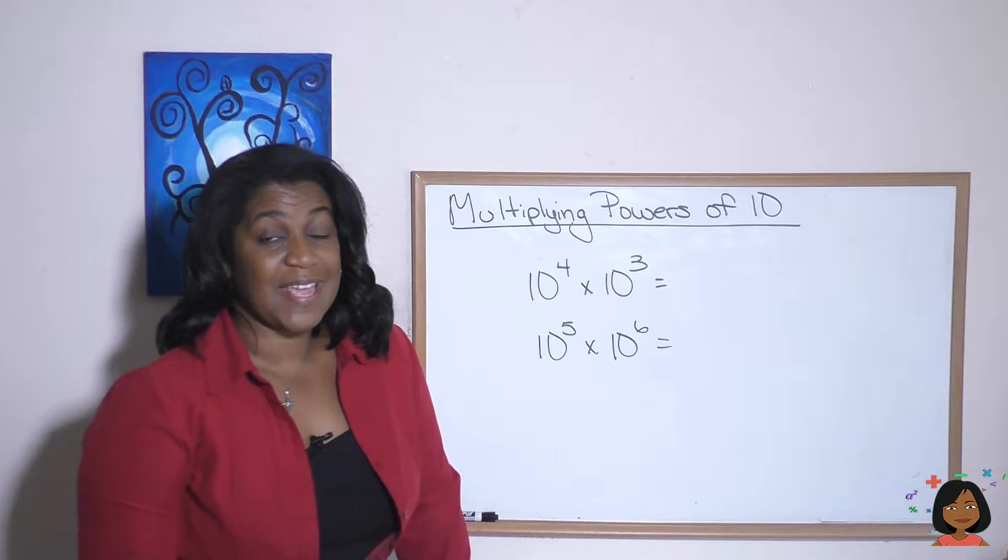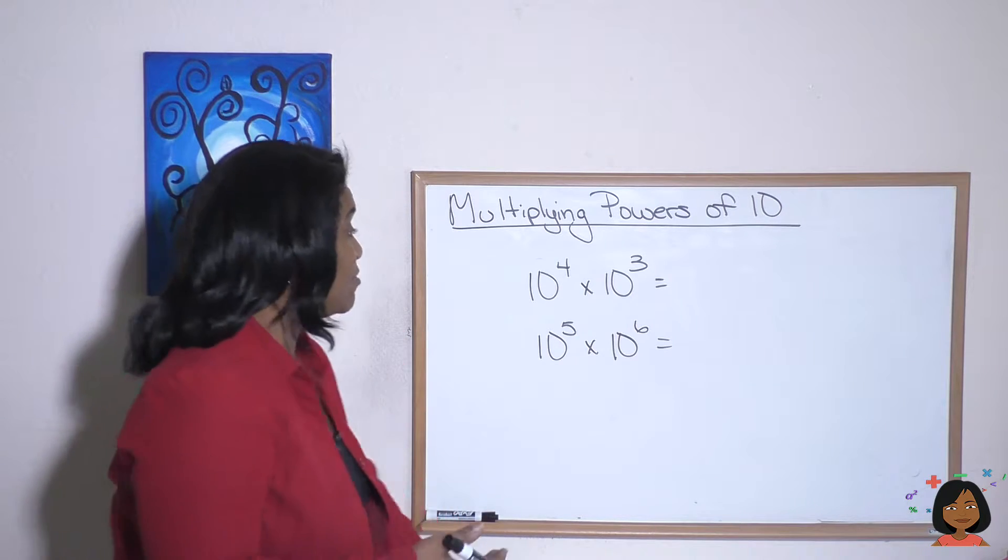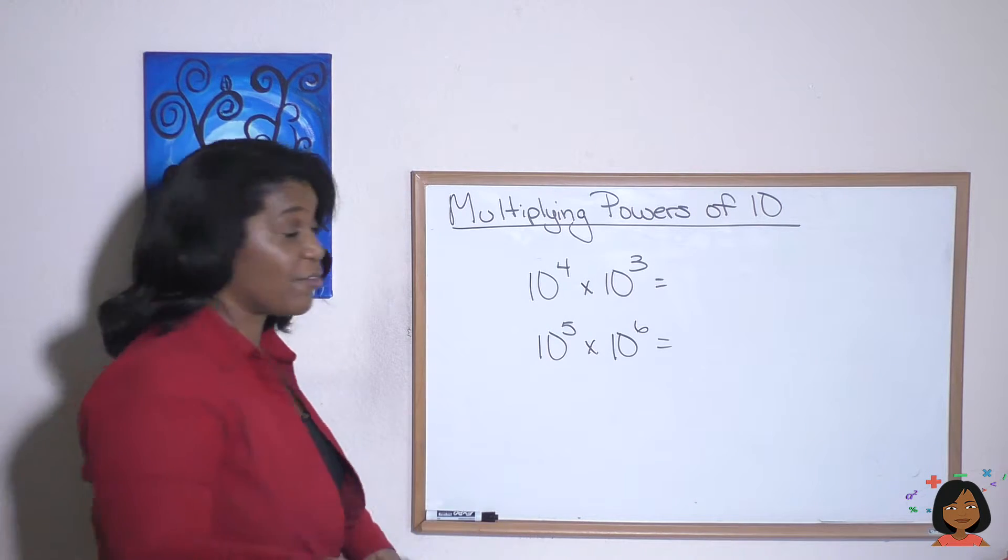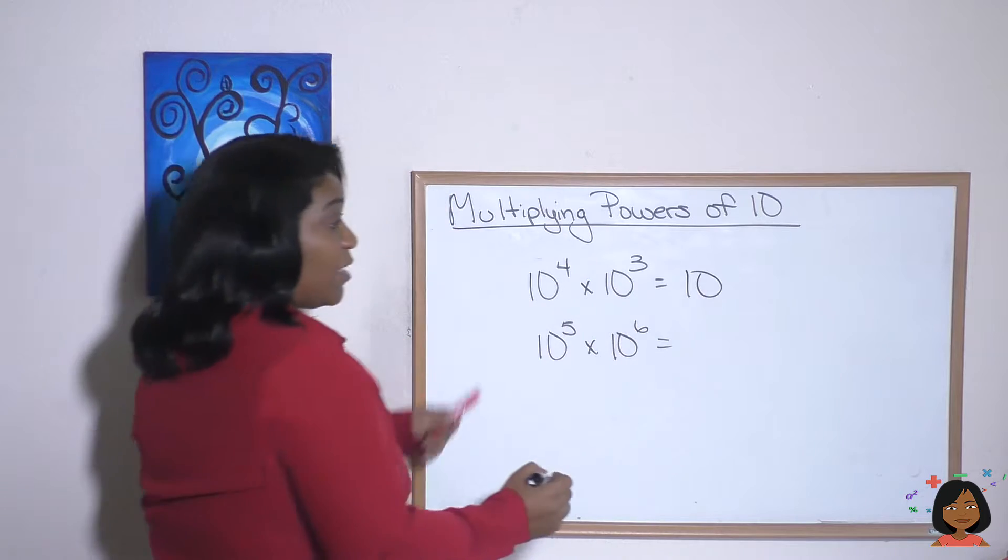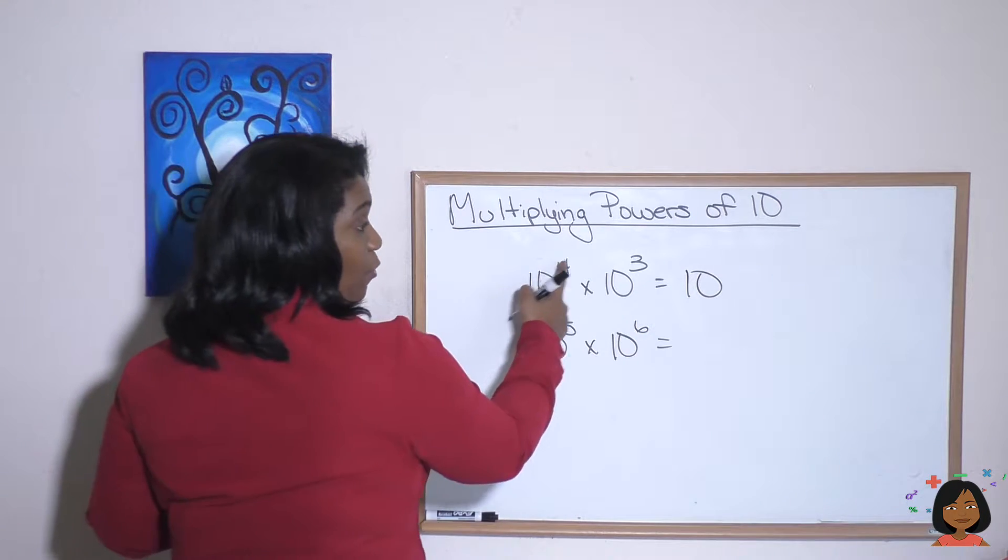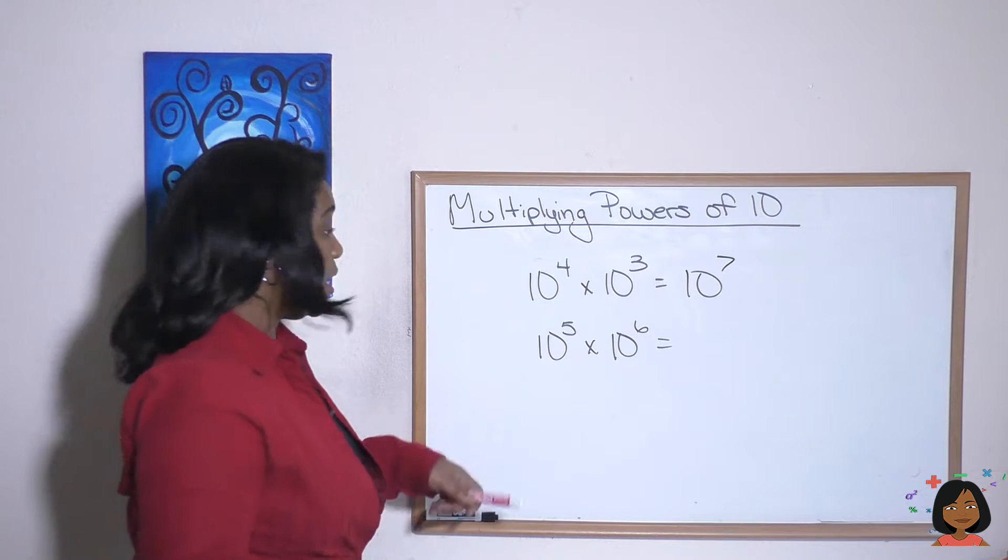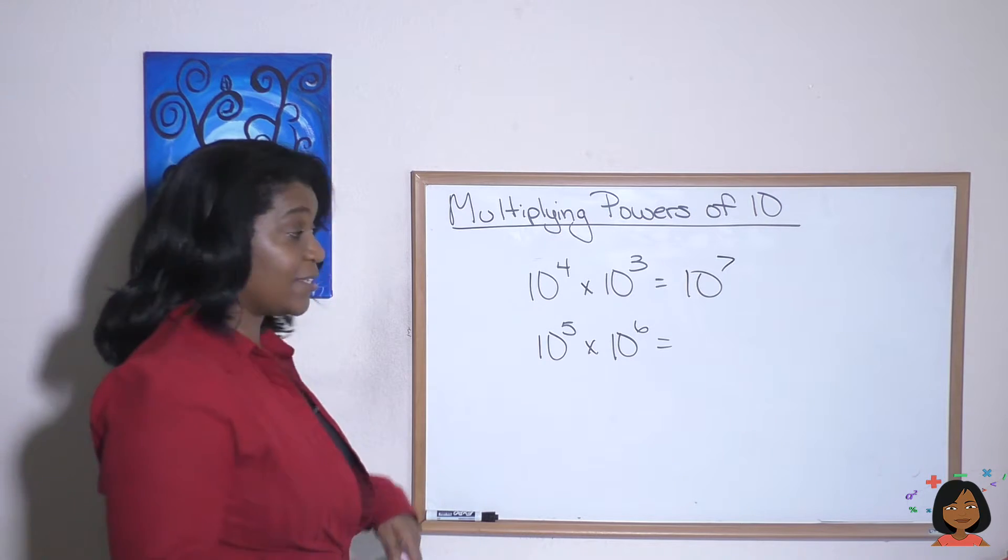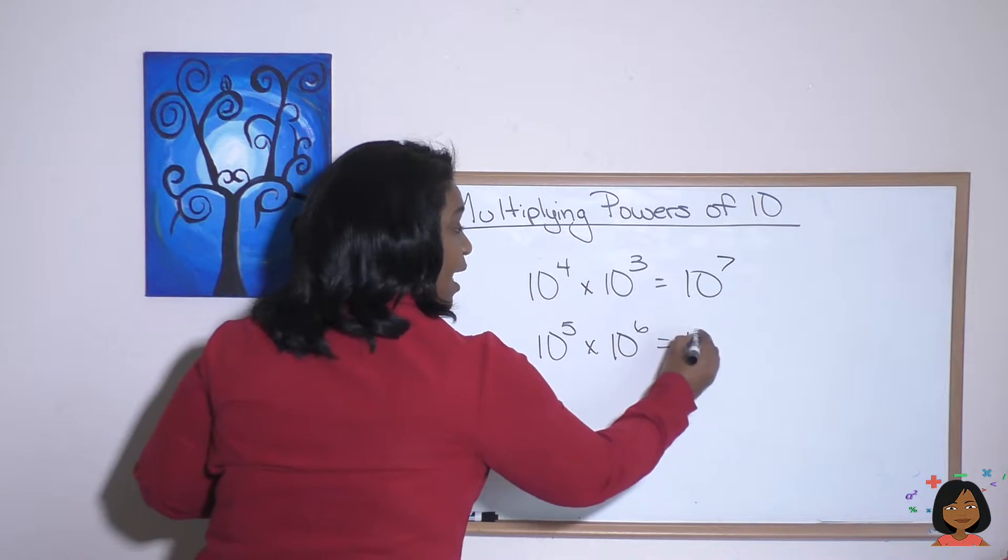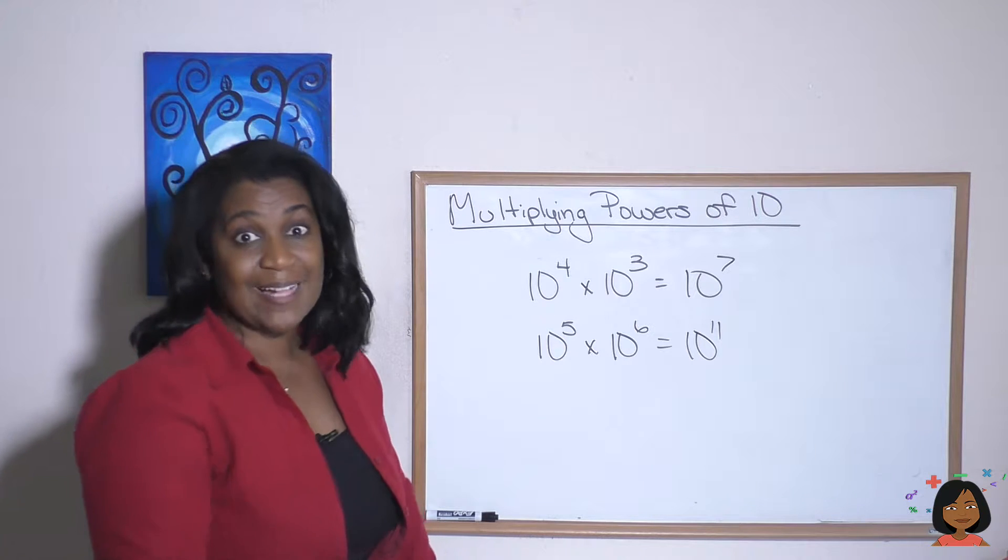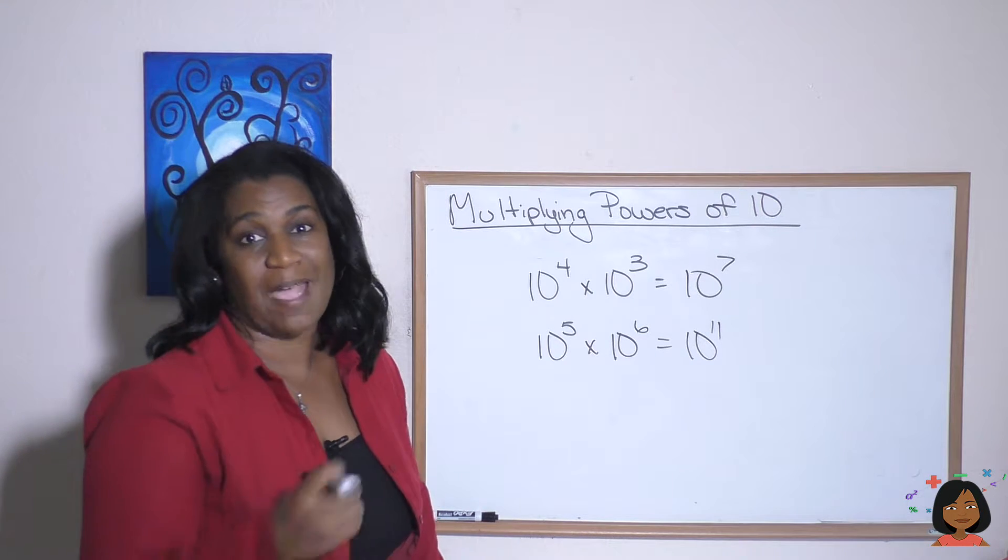Just to make sure you got this down, let's take a look at these two problems. 10 to the fourth times 10 to the third is going to be 10 to the, let's add the exponents. 4 plus 3 is 10 to the seventh. 10 to the fifth times 10 to the sixth, add the exponents. 10 to the 11th. That's the rule for multiplying powers of 10.